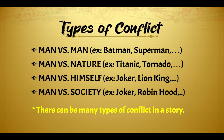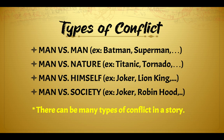So types of conflicts. We have man versus man — for example, in the movies Batman and Superman, they fight the antagonist. Man versus nature — Titanic or tornado. Man versus himself — for example, in the movie Joker or Lion King. Man versus society — also in the Joker and in Robin Hood. There can be many types of conflict in the story, so you can have man versus man, man versus himself, and man versus society all in one story.